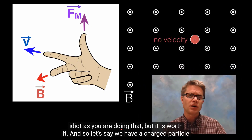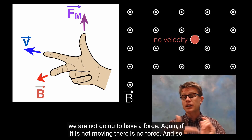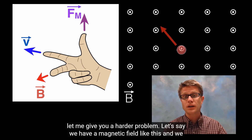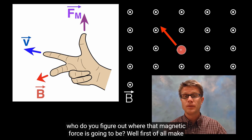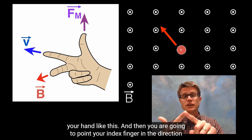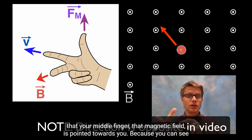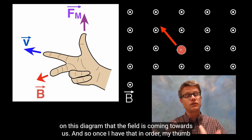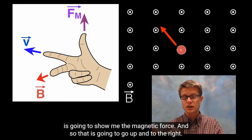If a charged particle has no velocity in a magnetic field, there is no magnetic force — if it's not moving, there's no force. For a harder problem: if we have a magnetic field and a positive particle moving up and to the left, use the right-hand rule — point your index finger in the direction of the moving charge, make sure your middle finger points toward you (since the field is coming toward us), and your thumb shows the magnetic force going up and to the right.